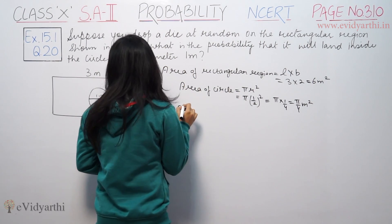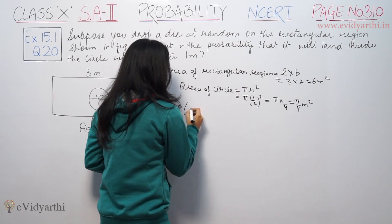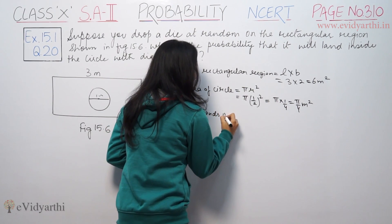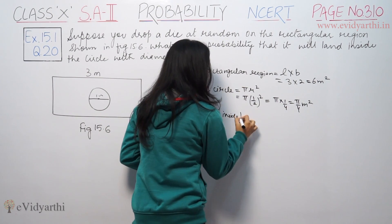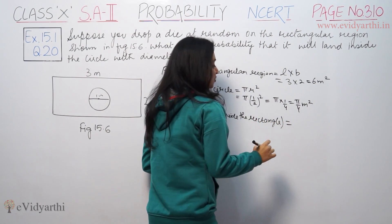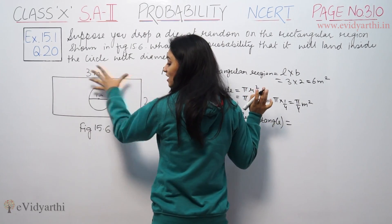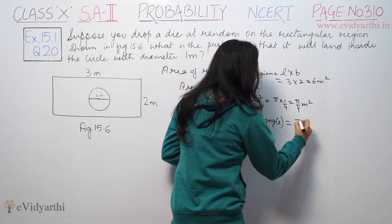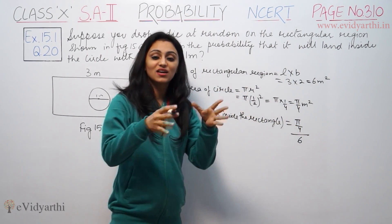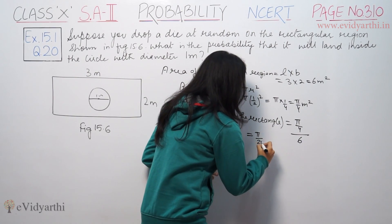Now, the probability that the dart will land inside the circle. The dart lands somewhere inside the rectangular region. The favorable outcome is the circular region divided by the total rectangular region. So, π/4 divided by 6 means π/24. This is the probability.